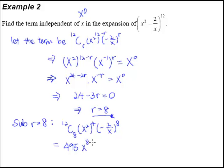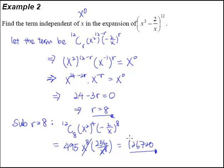We have x to the power of 8 from the first term, and negative 2 raised to the power of 8 gives us 256 — positive. The denominator will be x to the power of 8. So x to the power of 8 cancels, and the final answer will be 126,720. This is the term that is independent of x, the term that has got x to the power of 0 — the constant term. Whatever way you want to call it, they all mean the same thing: x to the power of 0.